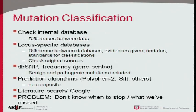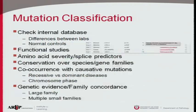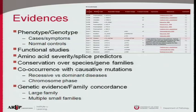This has been a manual process, but we are now moving toward an automated pipeline. We're able to automate the checking of our internal database, locus-specific databases, dbSNP, and similar resources, allowing us to come out with at least a smaller list of variants to review.